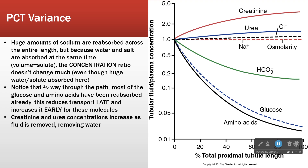As we go across the proximal convoluted tubule — from beginning to end on the x-axis — the y-axis shows the ratio of solute in the tubular fluid to solute in the plasma. Looking at the sodium line first: as we go across the proximal convoluted tubule, the ratio of filtrate to plasma doesn't change, even though a huge amount of sodium is being reabsorbed.